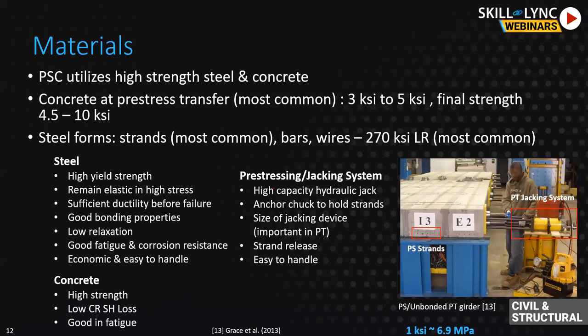The final strength commonly used is 4.5 to 10 ksi, but we can go even higher these days - even up to 25 to 30 ksi with ultra high performance concrete. So we can go to that extreme. And for steel, which we commonly use in reinforced concrete at grade 60 ksi.